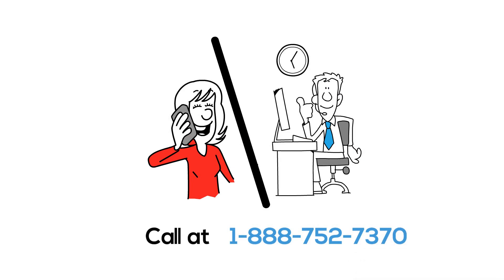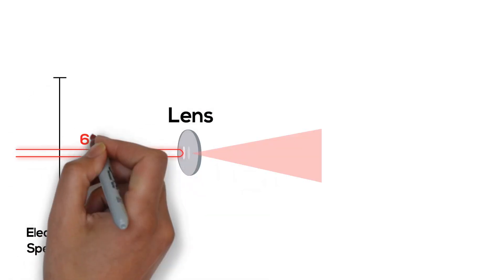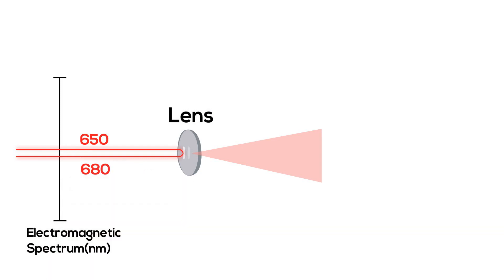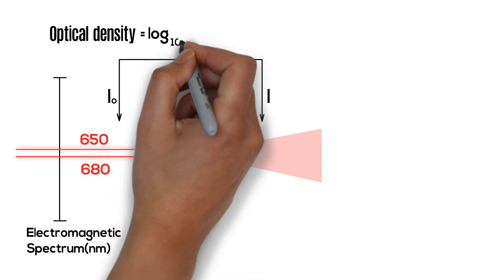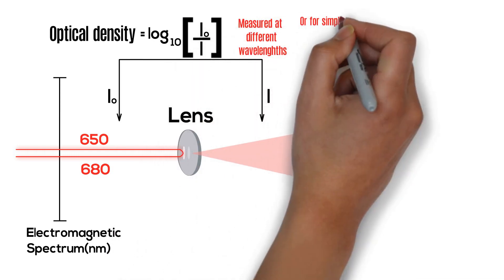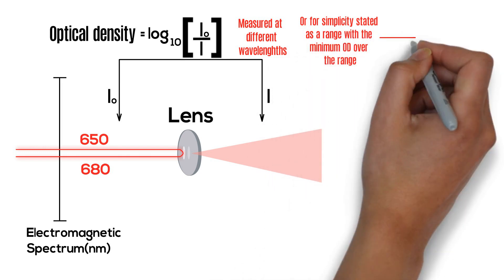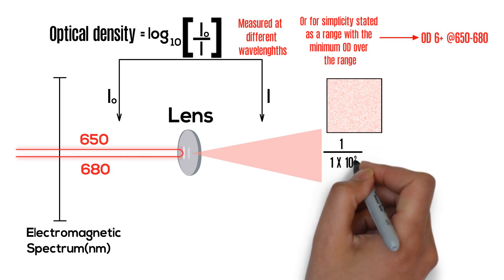Next, let's take a brief look at our industry notation and how to read the optical densities stated with our products. To calculate the optical density at any particular wavelength within a range, you would take the log base 10 of that particular wavelength's incident optical intensity divided by its transmitted optical intensity. Although each wavelength has its own optical density, for simplicity our industry states it as a range with the minimum optical density over that range.